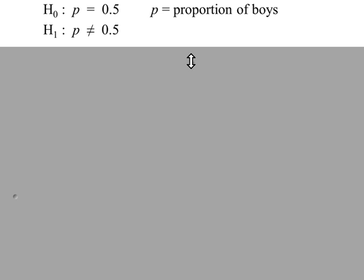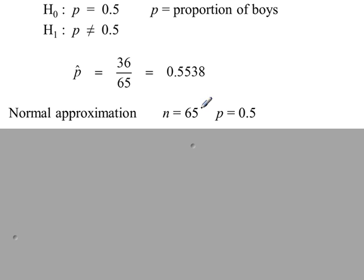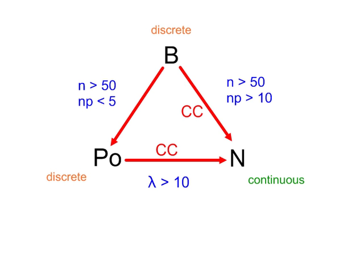So H0 and H1, our two-tailed test, p-hat, the binomial distribution here is 65 for n, p is 0.5, and there's no tables to work with. So we can use a normal approximation because the conditions here are met. You've got a large value of n, and the mean np is more than 10. There's no need to apply a continuity correction. We don't have to when we're doing a hypothesis test.